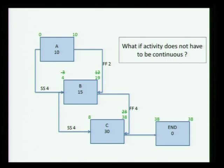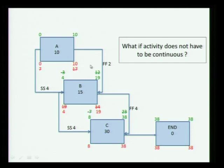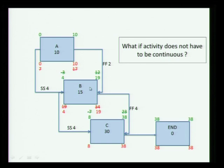Now we come to the question: what if an activity does not have to be continuous? This is very similar to our earlier example of excavation, laying pipe, and backfilling. You can see these values — with 0 to 10 representing the forward pass — and these values give the backward pass. Without getting into the detail: A starts at 0 and finishes at 10. B starts at 4 based on the start of A and goes all the way to 19. C starts at 8 based on the start of B and goes all the way to 38.